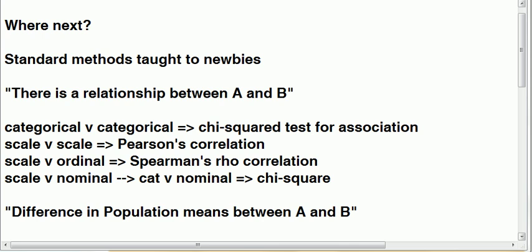Suppose the first one: there is a relationship between A and B. We've seen already in this course that if A and B are categorical versus categorical, you can use the chi-squared test for association.